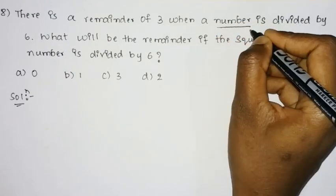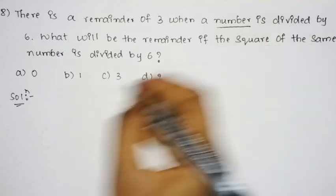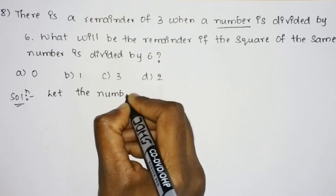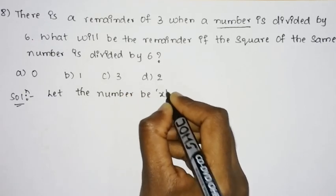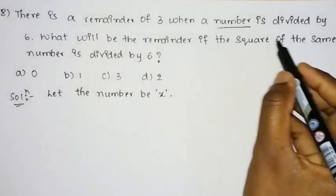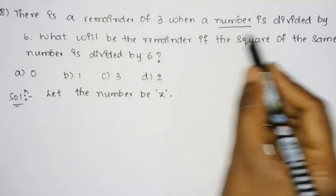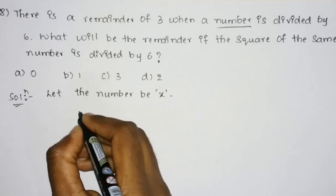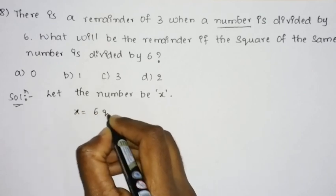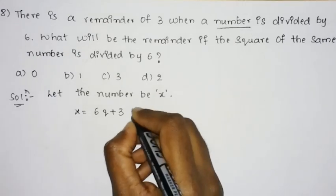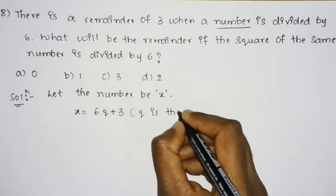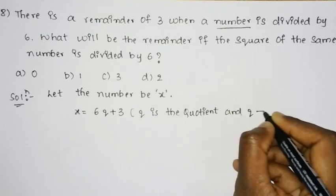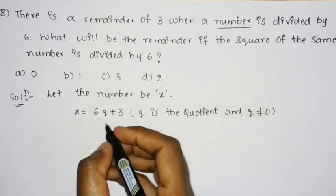They have given an unknown number. Let the number be x. They have told that there is a remainder of 3 when the number is divided by 6. So you can say x = 6q + 3, where q is the quotient. And q is not equal to 0.